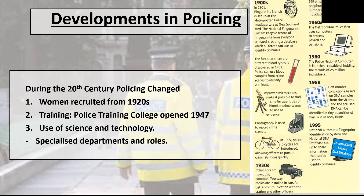The emergency telephone number was introduced in the 1960s, and the Met Police first used computers in the 1980s. The Police National Database was launched, meaning different forces could pull and share information. In 1988 came the first use of DNA, and in 1995 the National Automatic Fingerprint System was set up. We see slowly but surely science and technology developing the police force's way of catching and tracking down crime.